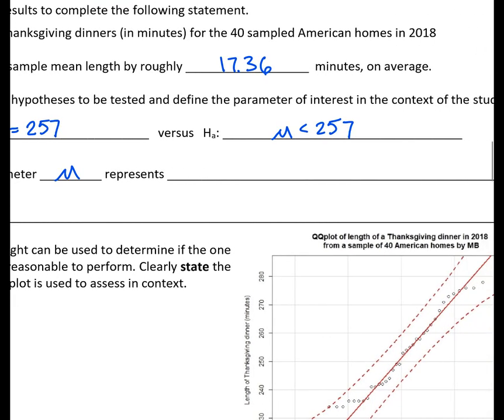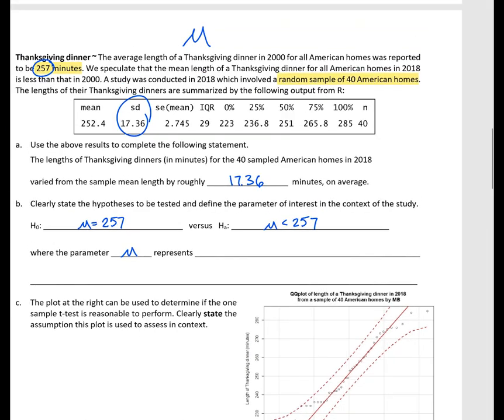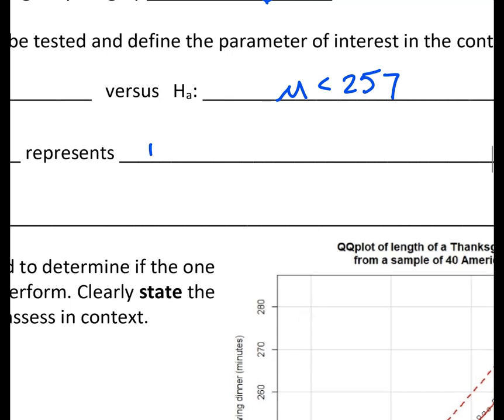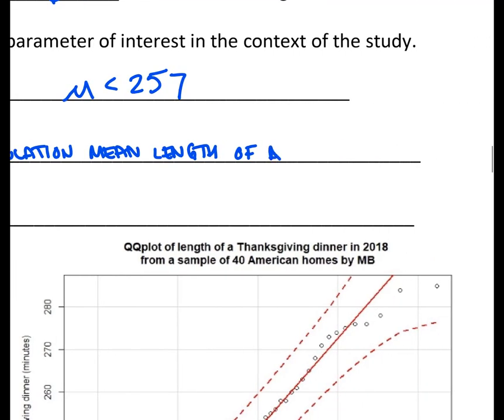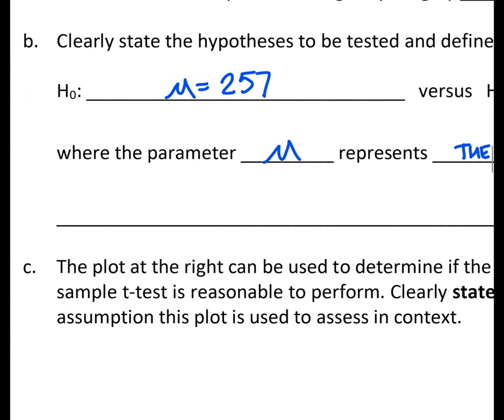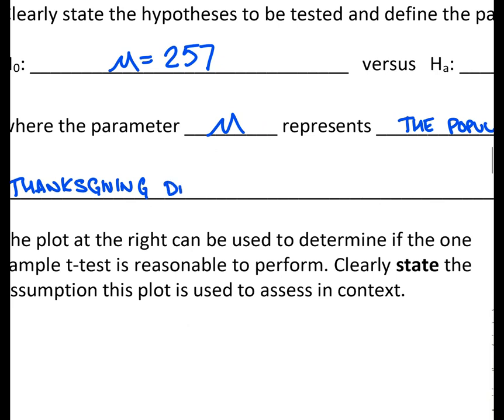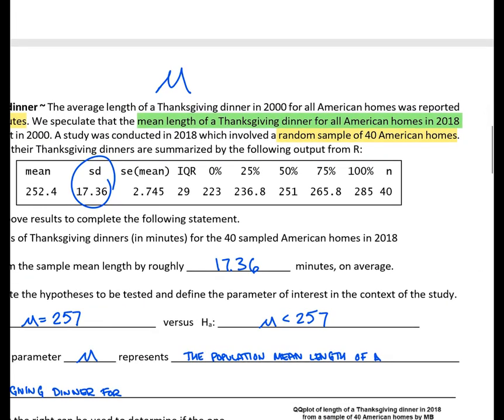Now we have to define the parameter μ. And here, μ represents the population mean. From there, we simply have to add context. So if we head back to our problem and look at the context that we have, we have the mean length of a Thanksgiving dinner for all American homes in 2018. We can simply add that in with our context down here. So again, μ represents the population mean length of a Thanksgiving dinner for, let's just check that context again, for all American homes in 2018.